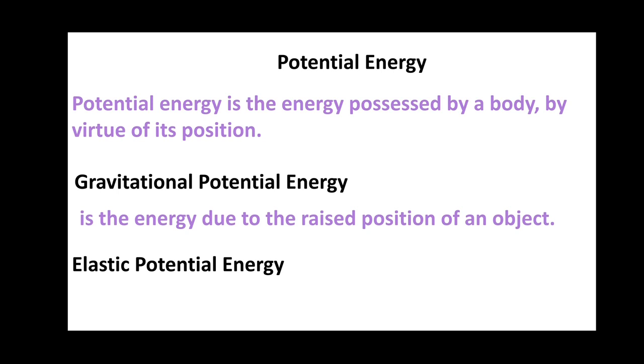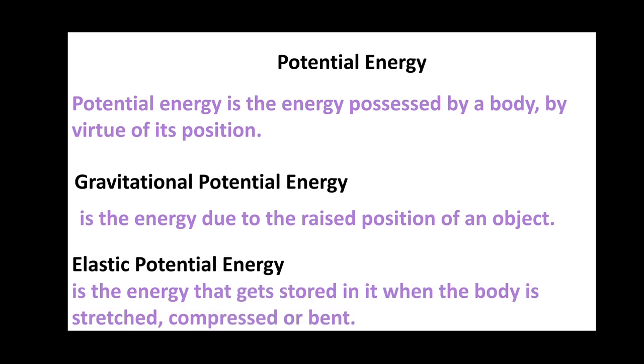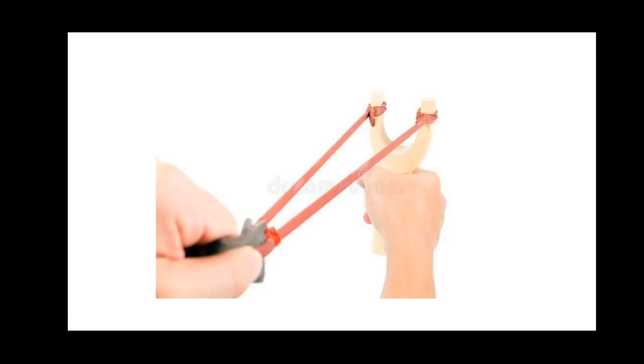Elastic potential energy of a body is the energy that gets stored in it when the body is stretched or compressed or bent. For example, when the elastic band of catapult is stretched, elastic potential energy gets stored in the band. This is a stretched catapult.